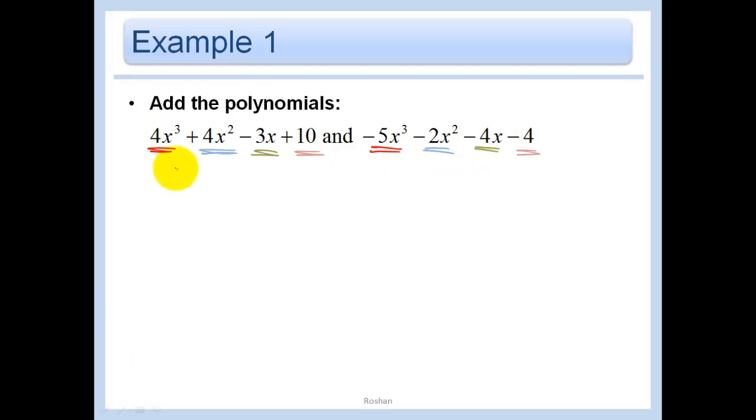And so first we'll do the red ones. So I have 4x cubes and negative 5x cubes, so that leaves me with negative 1x cubed. And then 4 minus 2 is just plus 2x squared. Minus 3 minus 4 is minus 7x. Plus 10 minus 4 is plus 6. And that's about all I have to do there.